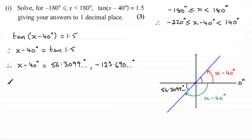So if I now add 40° to each of these two answers, that's going to bring us into this range. Adding 40° to 56.3099° is going to give us 96.3099°, and adding 40° to -123.690° is going to give us -83.690°.